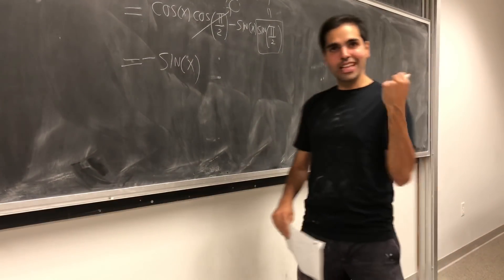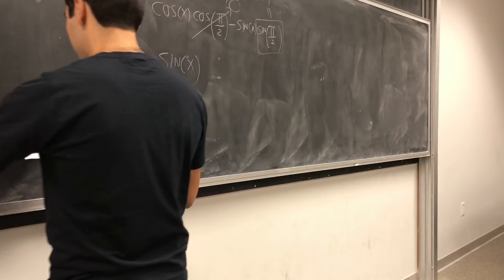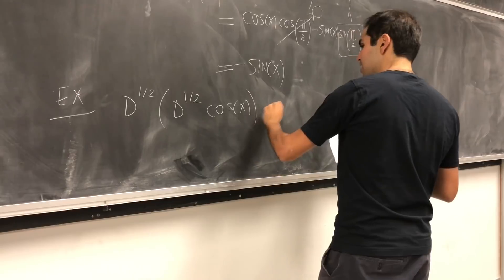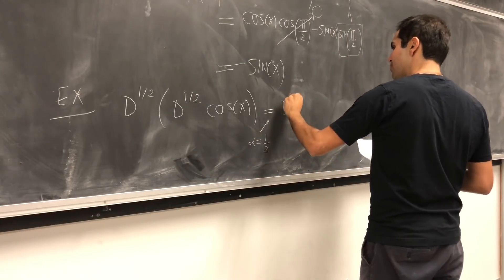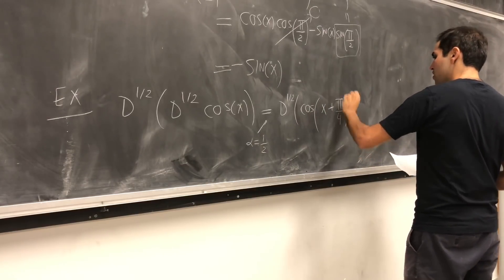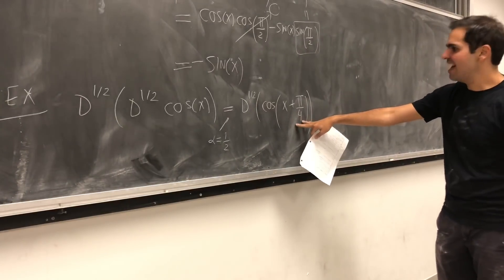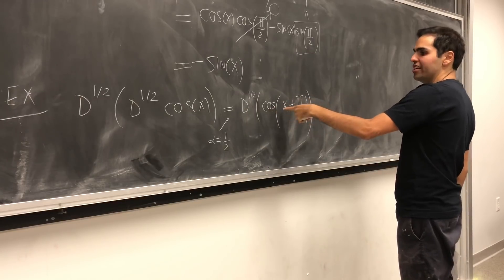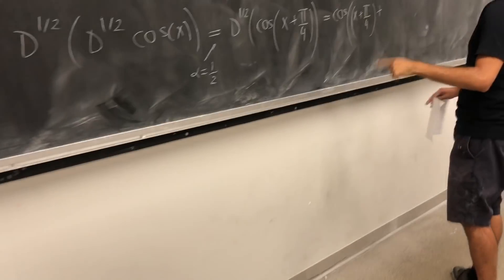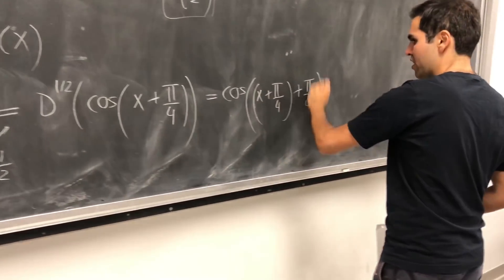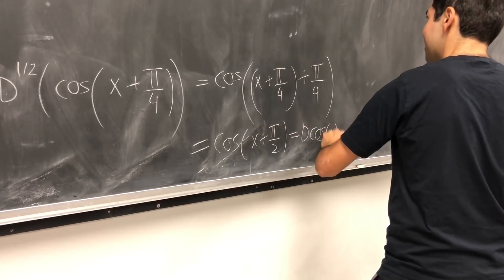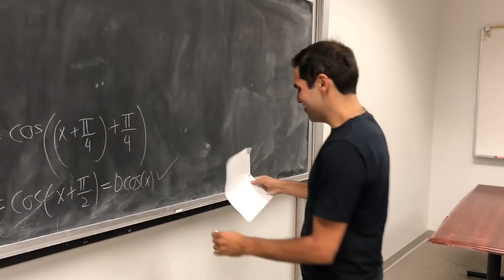Let me check that it makes sense with a half derivative. d^(1/2) of d^(1/2) of cos x — with α = 1/2, this becomes d^(1/2) of cos(x + π/4). You can also show that if you fractionally differentiate this it's like a shift, so it becomes cos(x + π/4 + π/4) = cos(x + π/2), which we've shown to be the derivative of cos x. So it also makes sense in terms of a half derivative — this is correct.